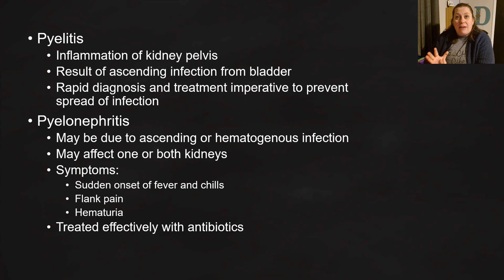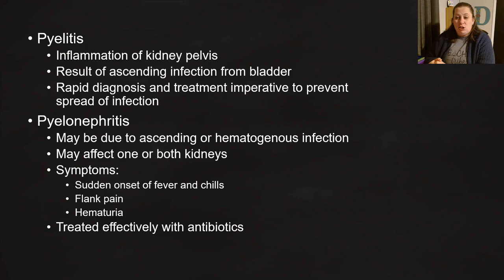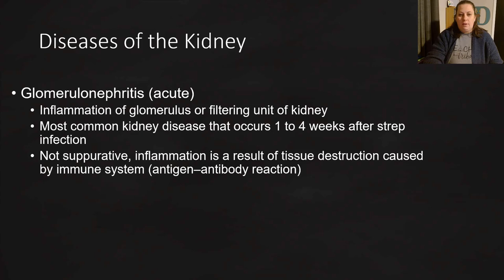Pyelonephritis can result from an ascending infection if not caught early, but it can also be caused by a hematogenous infection — meaning an infection in the blood that then transferred to the kidney from inside the body. It may affect one or both kidneys, and symptoms include sudden onset of fever and chills, flank pain, and hematuria. It is treated effectively with antibiotics, but a culture and sensitivity test may be needed to determine the best antibiotic.